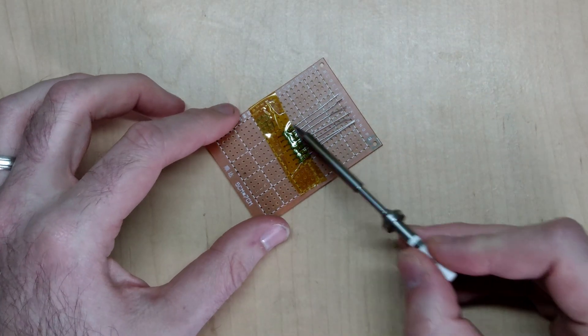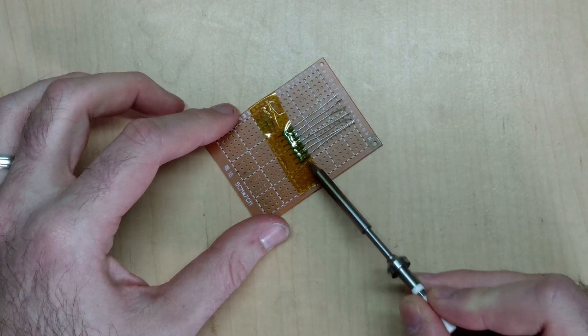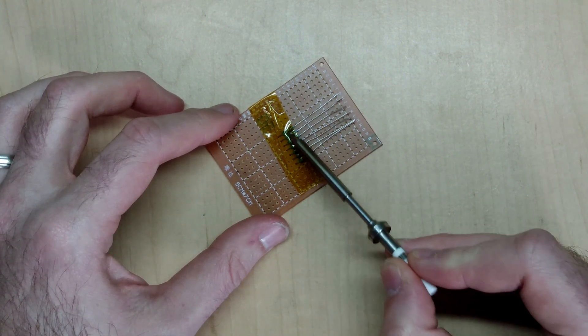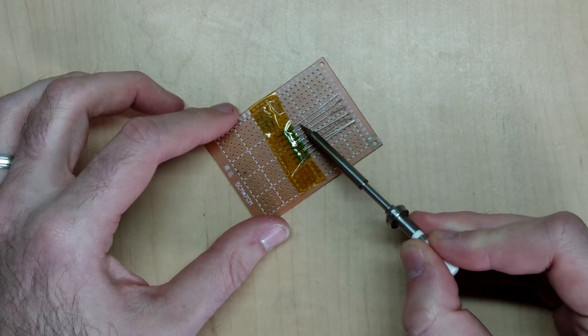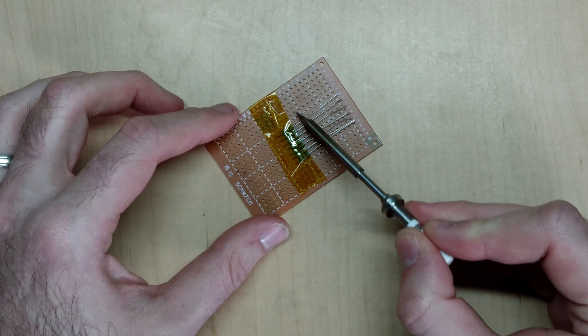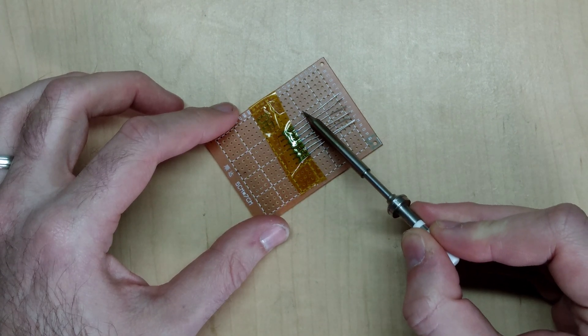Once you're happy with the alignment of this assembly, take one of the straightest leads from the opposite ends of the assembly and fold it across so that it makes contact with each of these other resistor leads.